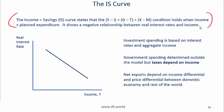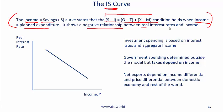The IS curve: IS means income equals saving. The IS curve states that savings minus investment equals G minus T (the government deficit) plus X minus M (net exports). This condition holds when income equals planned expenditure. The IS curve shows a negative relationship between real interest rates on the y-axis and income on the x-axis.